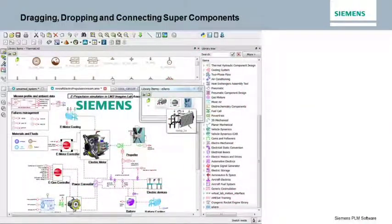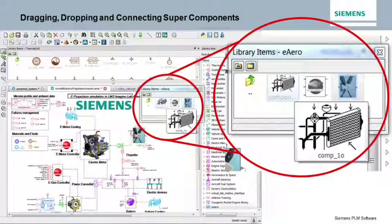The hybrid electric system is built up by dragging, dropping, and connecting super components from available libraries. In this example, you see a predefined super component available in the e-arrow library.